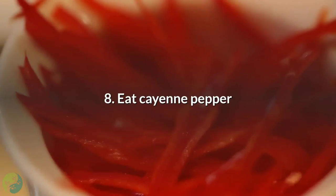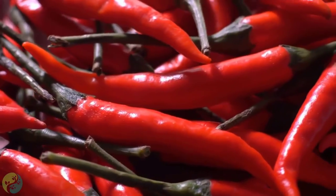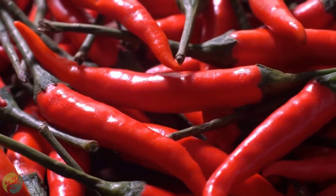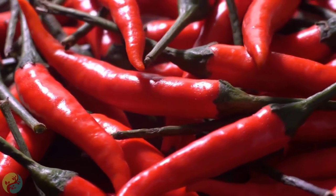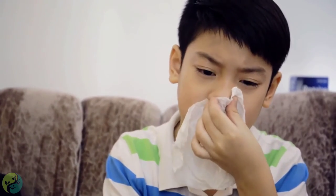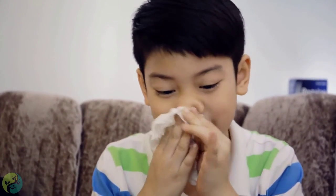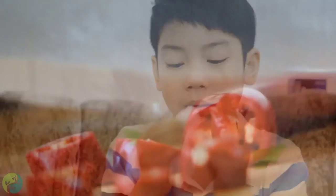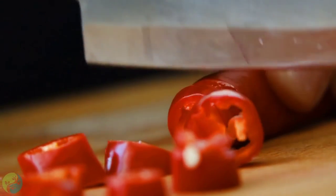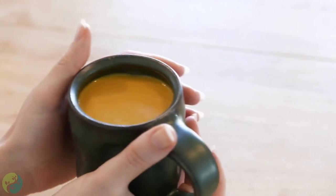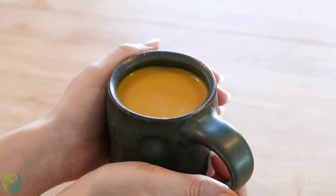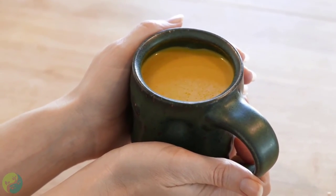8. Eat cayenne pepper. The capsaicin in cayenne pepper dries up mucus in the nasal passages, making it easier to breathe. It is also an anti-inflammatory spice and can decrease puffy, stuffy feelings in the nose. Sprinkle cayenne pepper on your favorite meals, or sip a spicy tea by adding one-quarter teaspoon cayenne pepper powder to a cup of boiling water.